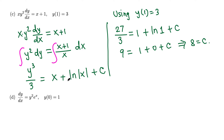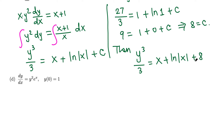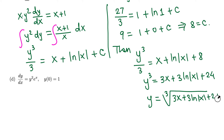Substituting back, y cubed over 3 equals x plus natural log of absolute value of x plus 8. Multiplying throughout by 3 gives y cubed equals 3x plus 3 natural log of absolute value of x plus 24. Taking the cube root of both sides, y equals the cube root of (3x plus 3 ln|x| plus 24).